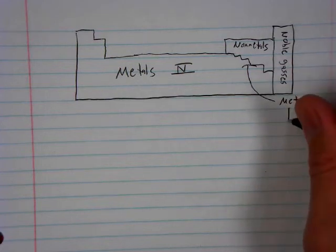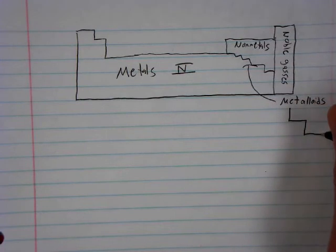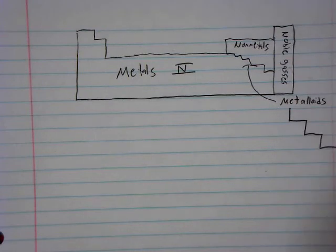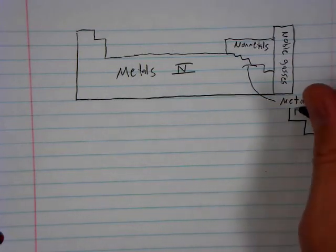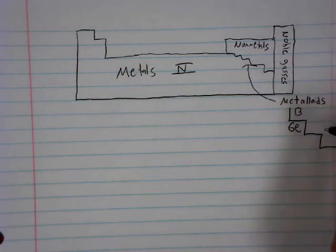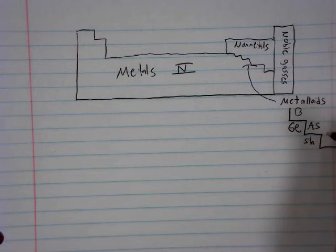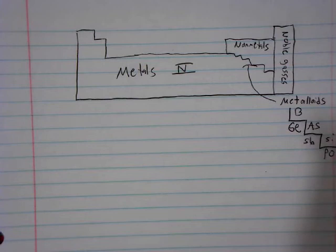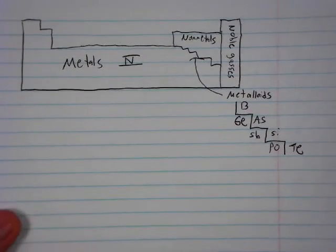So the metalloids have some properties of both metals and non-metals. And if we would zoom into those, zoom in for you. Look at that. That is so fancy. So the metalloids are boron underneath boron. I'm just going to list them out. So those are the metalloids. Nothing that you really have to memorize, but it's just good to know which ones are the actual metalloids on the periodic table.